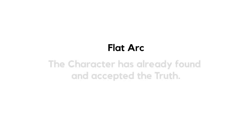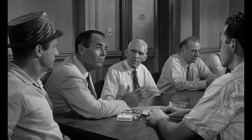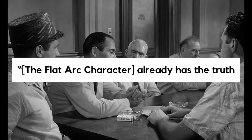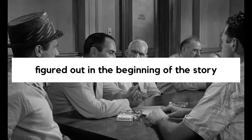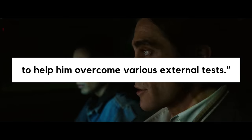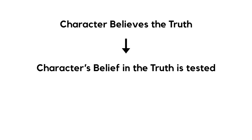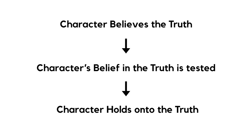Next, let's take a look at the flat arc. In a flat arc, the character has already found and accepted the truth. They have no need, no lie, and make no internal change. Weiland writes: the flat arc character already has the truth figured out in the beginning of the story, and he uses that truth to help him overcome various external tests. The flat arc looks like this: character believes the truth, character's belief in the truth is tested, character holds on to the truth.